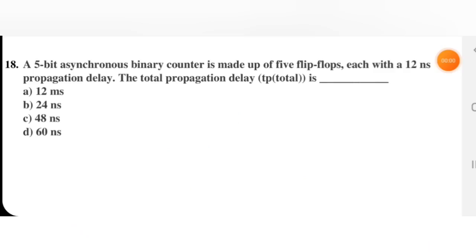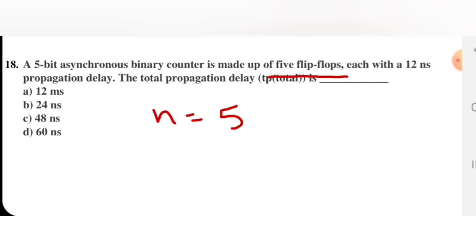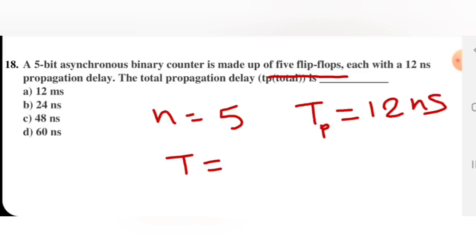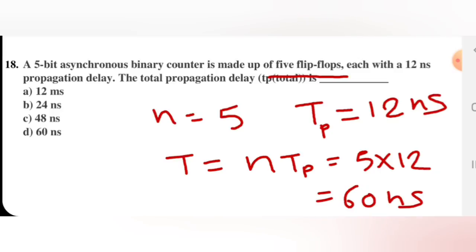Next question: a 5-bit asynchronous binary counter is made up of 5 flip-flops each with a propagation delay of 12 nanoseconds. The total propagation delay T equals n into tp, which is 5 into 12 equals 60 nanoseconds. D is the correct option.